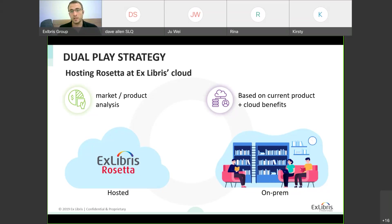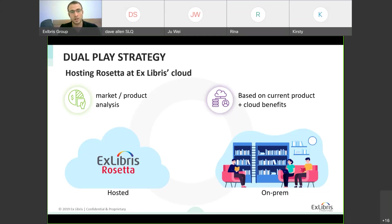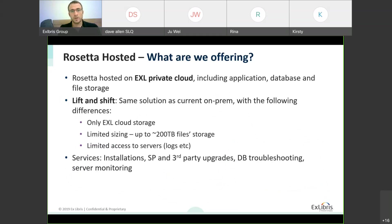We are going in both directions with no plan to stop either. The advantage is that a single development team provides functionality good for both. Rosetta hosted is on Exlibris private cloud. Neither Rosetta nor the Exlibris cloud is new — it's a proven solution with a deep feature set, based on state-of-the-art Infinidat storage with high availability and security. Currently the solution will be limited to smaller institutions — specifically customers with up to 200 terabytes of files — while we utilize the Exlibris cloud for application, database, and file storage.